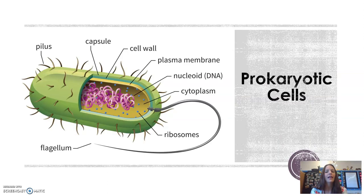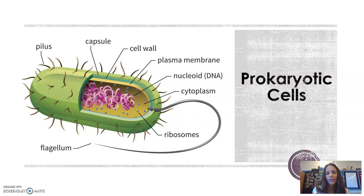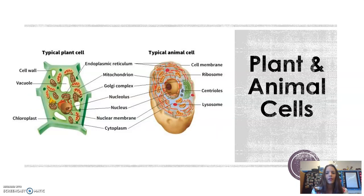Here's a quick glance at what a prokaryotic cell looks like. At this point, pause the video and go ahead and sketch this cell out, and please label the parts as well. This is something you will be responsible for knowing later on in this unit. Then here is a look at a typical plant and a typical animal cell.